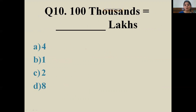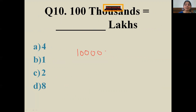Question: 100 thousands equals how many lakhs? Simple — thousands has three zeros, so 100 with three zeros gives you 1,00,000, which is 1 lakh. Wonderful! Good try — even if you got the wrong answer, I hope you've now understood: 100 thousands equals 1 lakh.